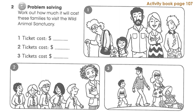Now we come to exercise two — also problem solving, the same kind of question. Work out how much it will cost these families to visit the Wild Animal Sanctuary. Here we have this older woman — let's say she's a pensioner — and these adults. How much does the ticket cost? They are going to pay £44.50. The other problems will be for homework. Try to do this game at home — it's very lovely.